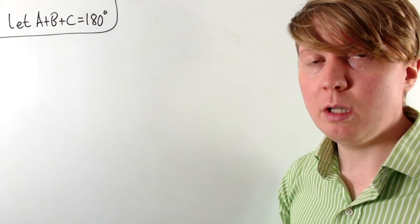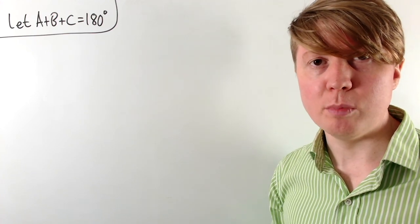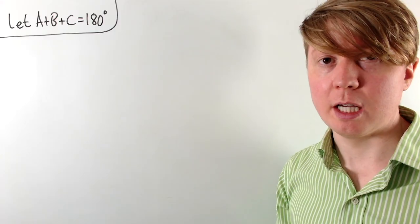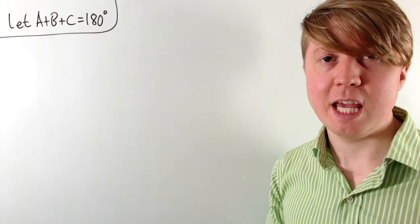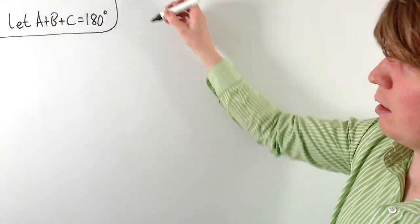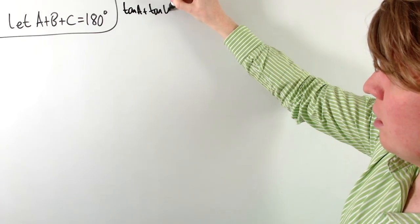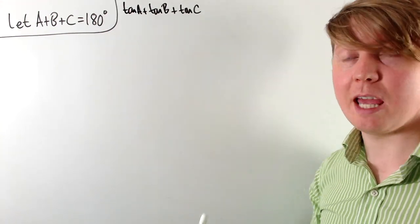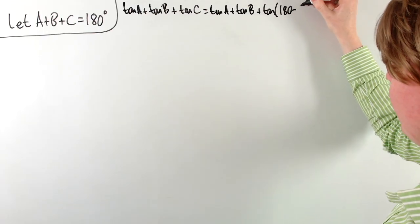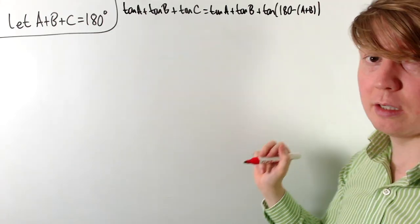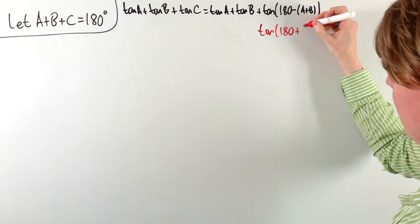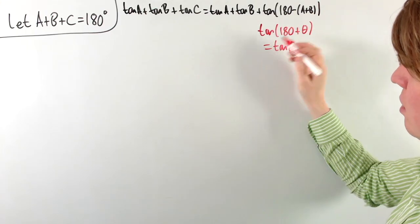To generalise, we notice there was nothing special about the number 1 — we could replace it with θ and all the working still holds. Going even more general, we work with three angles a, b, c where a + b + c = 180°. Starting with tan a + tan b + tan c, we rewrite c as 180° − (a + b), using the fact that tan is periodic with period 180°.